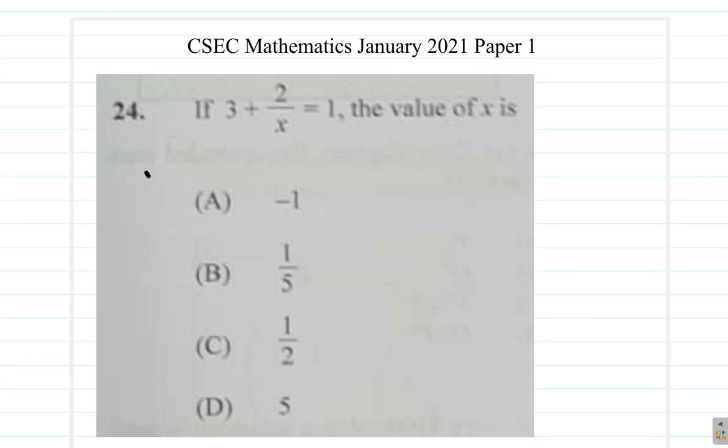See what this is saying. If 3 plus 2 over x equals 1, the value of x is... Alright, let's see what happens here.